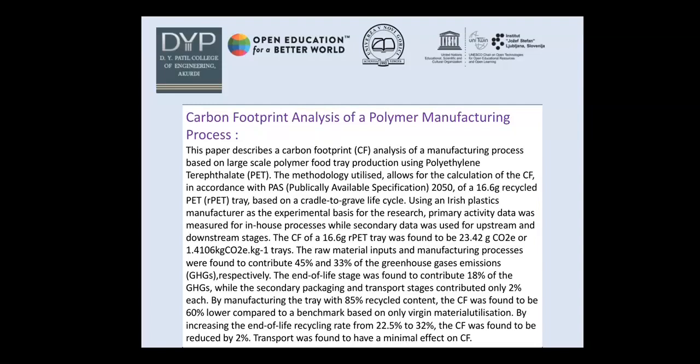Raw material inputs and manufacturing processes contribute 45 percent and 33 percent of greenhouse gas emissions respectively. End-of-life stages contribute 18 percent, while secondary packing and transport each contribute only 2 percent. By manufacturing the tray with 85 percent recycled content, the carbon footprint was 60 percent lower compared to a benchmark using only virgin material. Increasing the end-of-life recycling rate from 22.5 percent to 32 percent reduced the carbon footprint by 2 percent, and transport had a minimal effect.